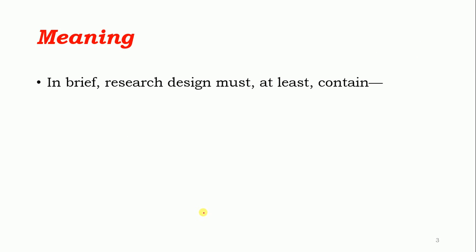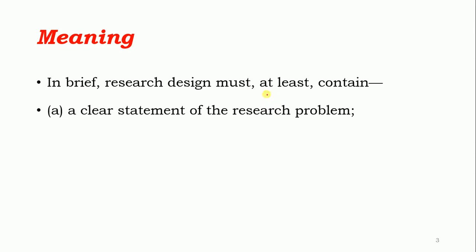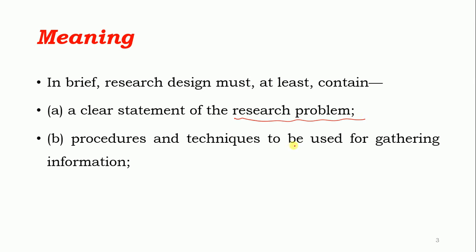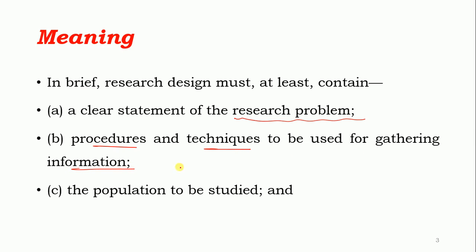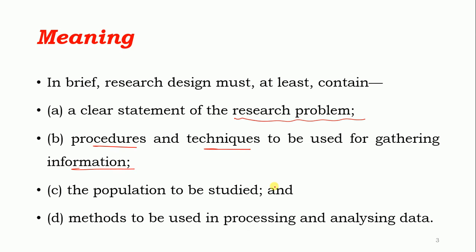Research design must at least contain: a clear statement of the research problem; procedures and techniques to be used for gathering information; the population to be studied; and the method to be used for processing and analysis of data. So deciding the research problem, procedure and technique for gathering information, population, and method for processing and analyzing data is what we call research design.